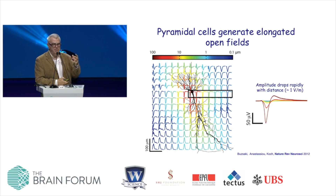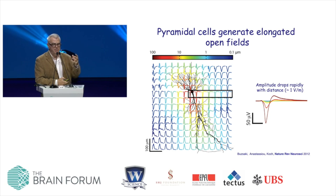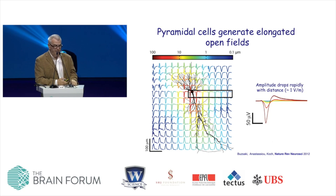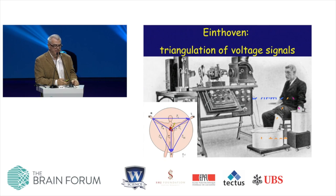Neurons generate an electric field which can be measured with a sensor placed very close to the neurons, as shown here. But this electrical field decreases very quickly with distance from the neurons. The problem is that this neuron is surrounded by hundreds and thousands of other neurons, and we would like to hear the voices of each of them. One way of doing this is triangulating their position in space — this is not very new; it has been done with EKG, which is almost a hundred-year-old technique.